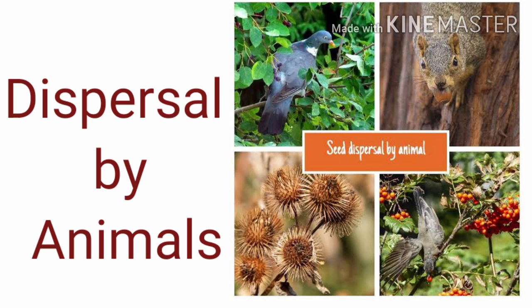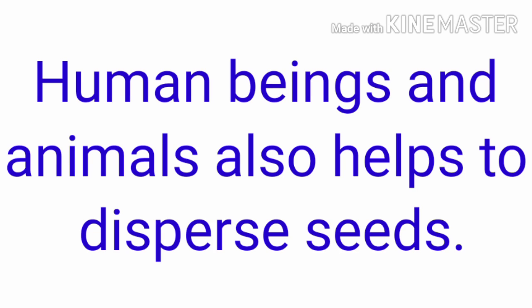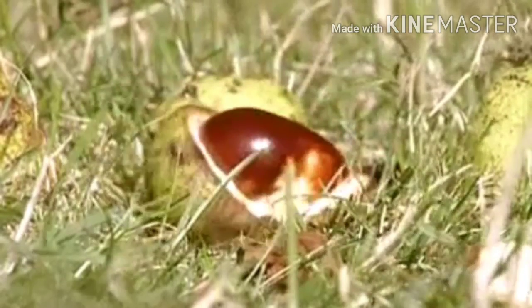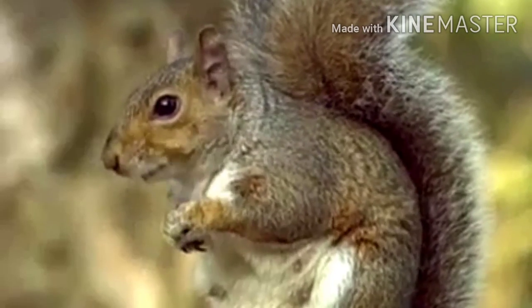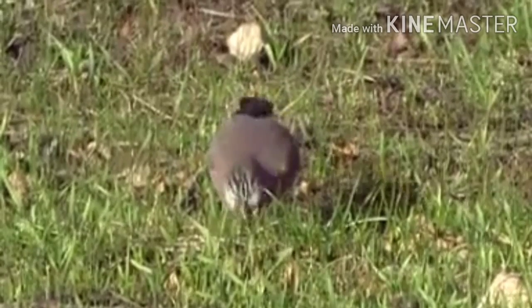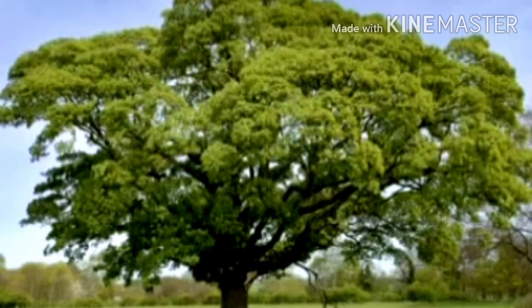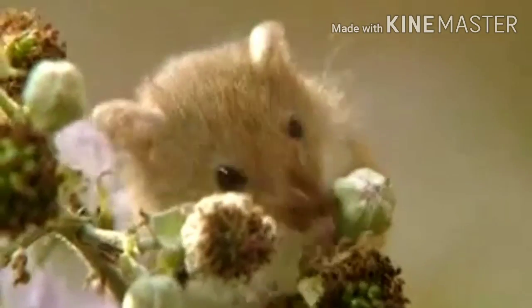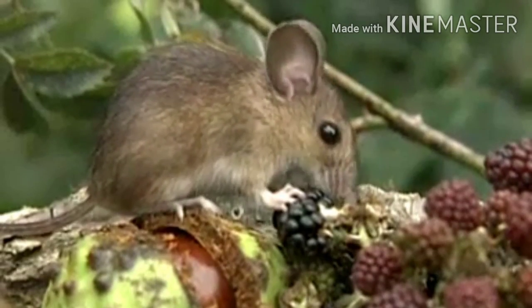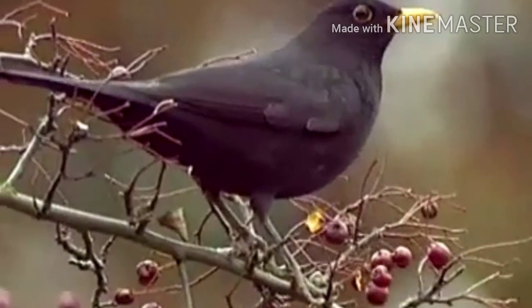The first one is dispersal by animals. Human beings and animals also help to disperse seeds, like wind and water. Tree seeds like cherry, papaya, and nuts fall to the ground and are eaten by animals and birds. They eat whole fruits at one place and pass out the undigested seeds after some time at another place.